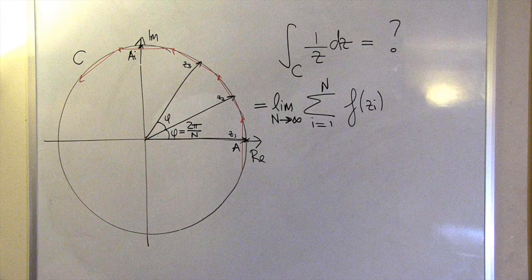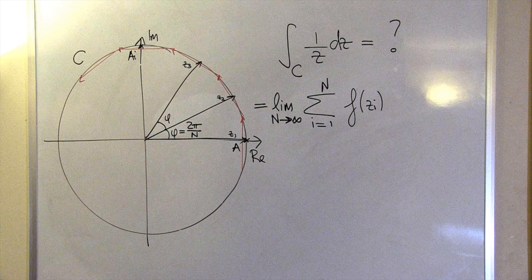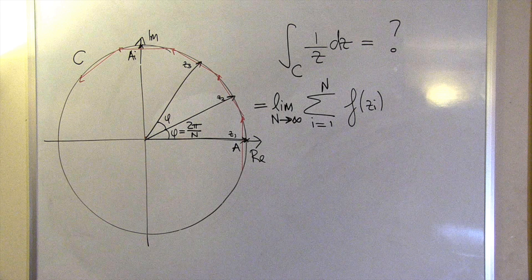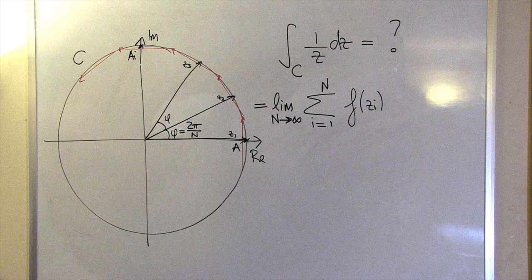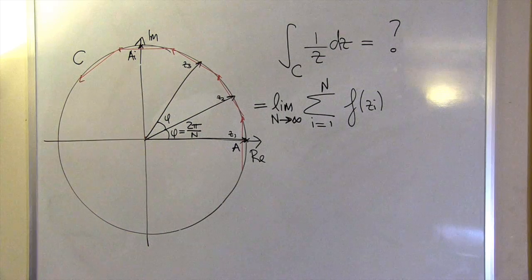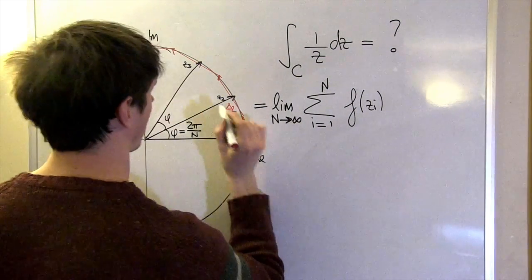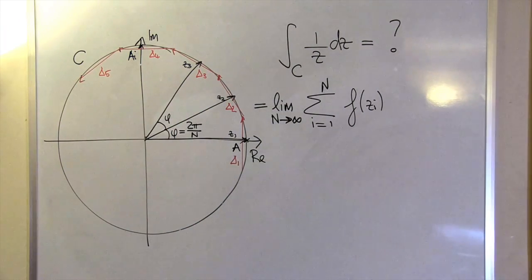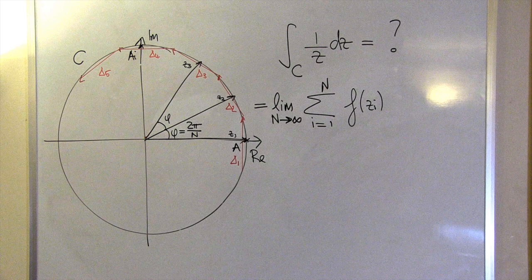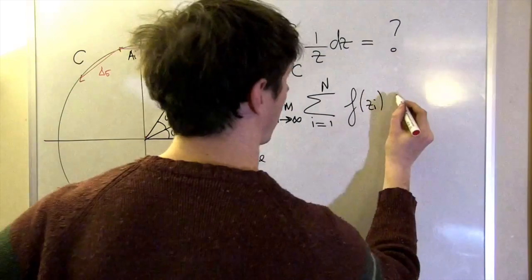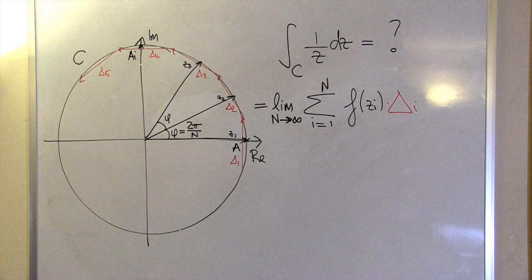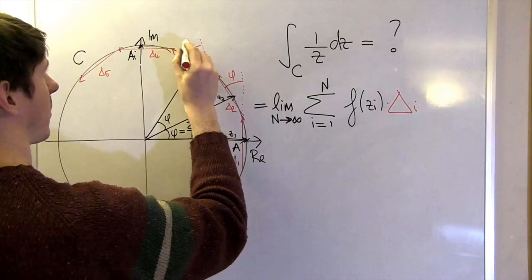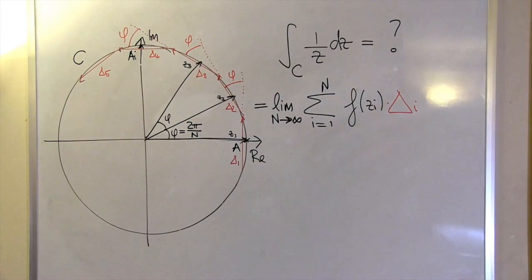Now that we have an approximate value of the function on each of the linear pieces, normally the next thing to do would be to multiply that value by the length of each piece. But each piece is actually a vector—it has a length and it also has a direction. Complex numbers are great at representing vectors, and so each piece delta i can be expressed as a complex number. Because we're doing complex integration, we're going to multiply the complex number f of z i by the complex number delta i. This is all starting to sound a bit complicated, and so let's expand out the sum and work through it term by term.